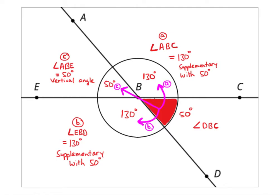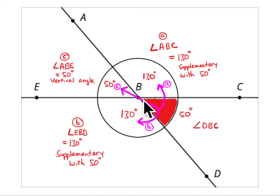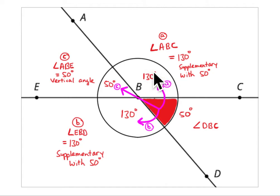These are the practice problems for lesson 14. In problem one, you are given the size of angle DBC, which is 50 degrees, and you need to figure out the other three angles. Angle ABC is supplementary to angle DBC, meaning they add to 180 degrees and form a straight line. So angle ABC has to be 130 degrees, since 50 plus 130 equals 180.